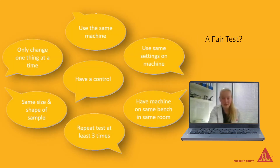But we have to make sure that this is a fair test by only changing one variable at a time. We always use the same machine with the same settings in the same room. We also use the same length, width and shape of test sample. In fact, we have a special punch to cut out our test samples to make sure that they are identical in shape and size.